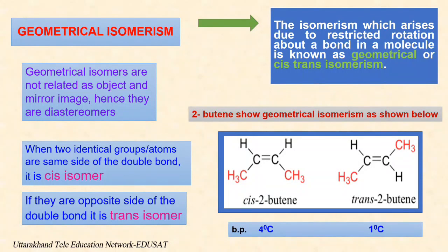For example, 2-butene exists in two spatial arrangements: cis-2-butene and trans-2-butene. In the cis isomer, the two methyl groups are arranged on the same side of the double bond, whereas in the trans isomer, they are on the opposite side. Geometrical isomers often show different physical and chemical properties. The difference in physical properties is more significant when there is more difference in polarity. Usually the dipole moment of the cis isomer is greater than that of the trans isomer, so the cis isomer has a slightly higher boiling point and greater solubility in polar solvents. In general, trans isomers are more stable than cis isomers.